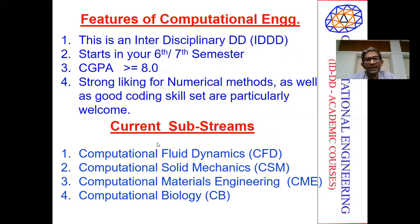One can think of a possible sub-stream — it's not very mandatory. One can have a mix of courses; somebody going through such an interaction can also pick up quite a number of courses from the CFD sub-stream and also the computational solid mechanics sub-stream. It's also possible if somebody is doing material science or biomaterials — one can pick up courses from computational biology as well as computational material science. These are only suggested sub-streams; it's not that one has to stick to them.